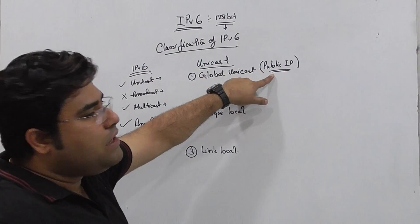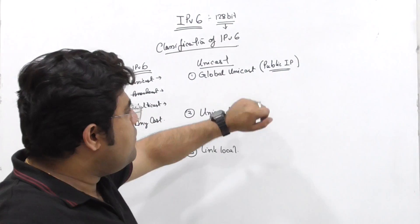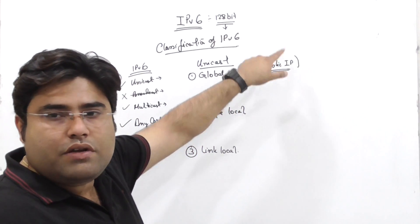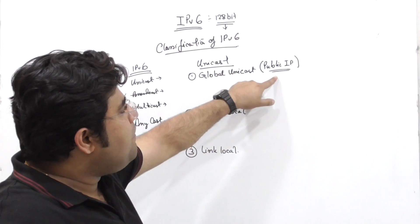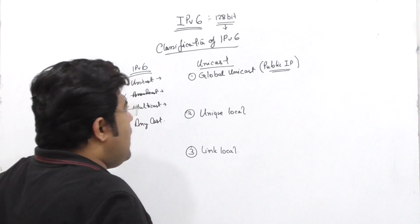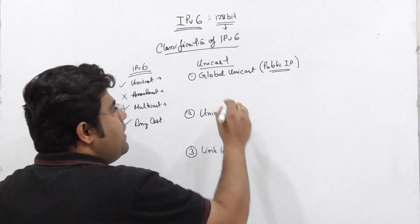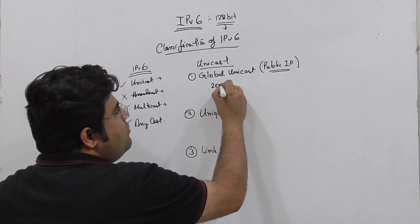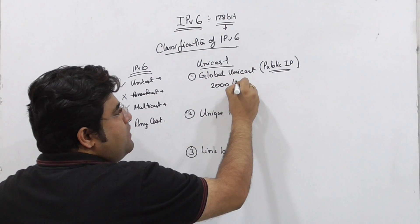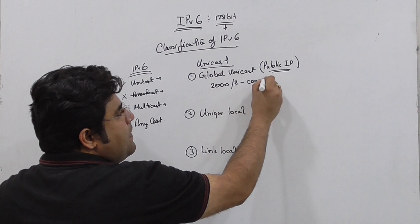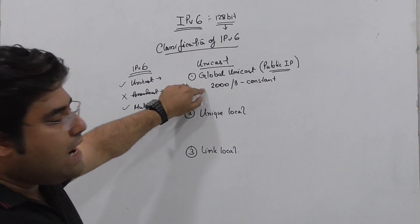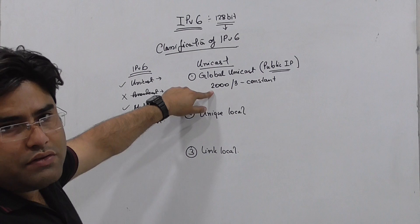Global unicast is similar to the public IP of IPv4 — the registered IP. The public IP is always internet routable. Any address that is starting with 2000 — the address has a 3-bit constant — is a global unicast address.